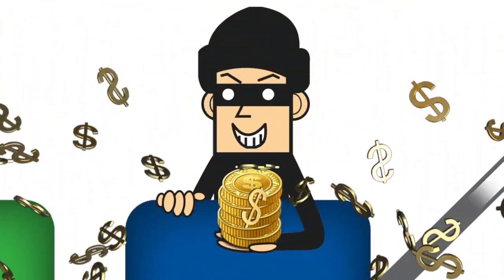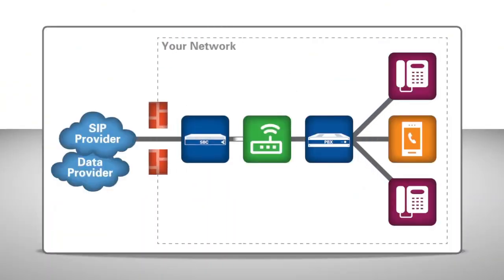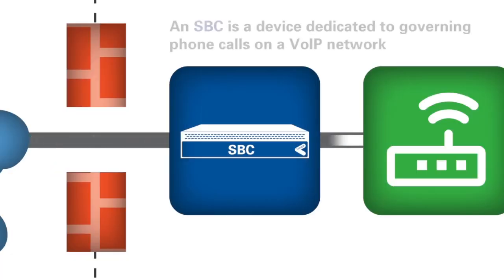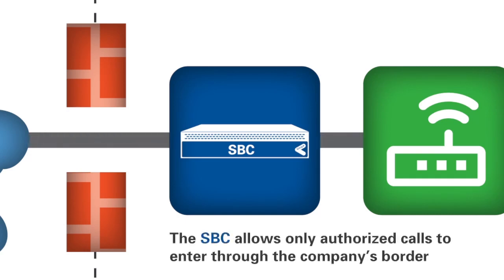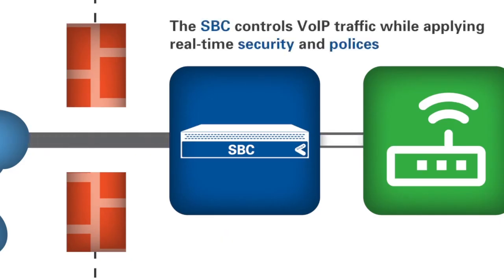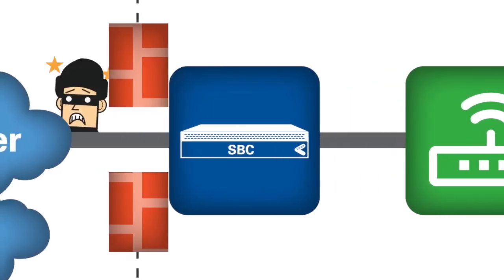But it's not too late. You can prevent the massive phone bill before it happens. Enter the session border controller. In simplest terms, an SBC is a device dedicated to governing phone calls on a VoIP network. The SBC allows only authorized calls — also known as SIP traffic — to enter through the company's border, which is between trusted and untrusted networks. The SBC controls VoIP traffic while applying real-time security and policies, thus helping your firewall do its job.